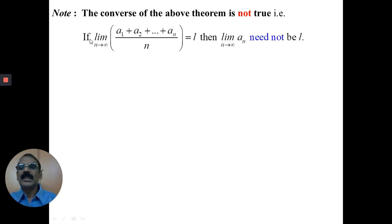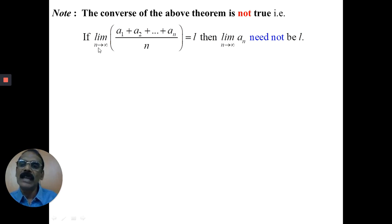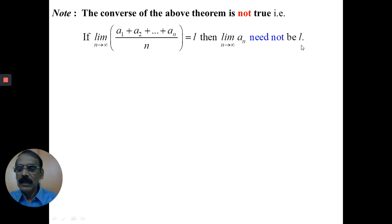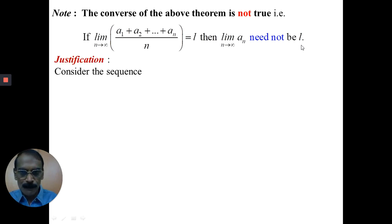That is, if the limit of (a1 + a2 + ... + a_n)/n as n tends to infinity is l, then the limit of a_n as n tends to infinity need not be l.